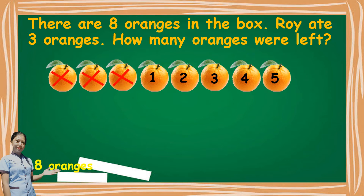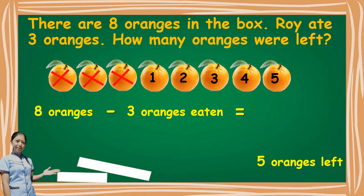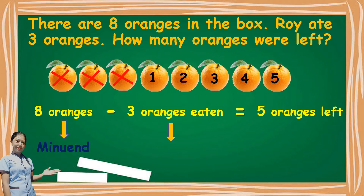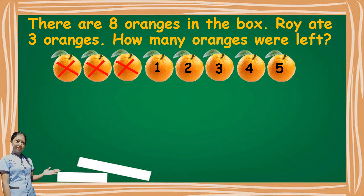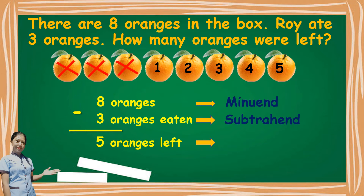So, let us now write a number sentence. Eight oranges minus three oranges eaten is equal to five oranges left. The minuend is eight. Three is the subtrahend. And five is the difference. There is another way of writing a subtraction sentence: write first the minuend, then the subtrahend, draw a line to show equal, then the answer. Eight minus three is equal to five.